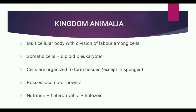In Kingdom Animalia, except for sponges, cells are organized to form tissues, with each tissue being specialized for a specific function. In sponges, cells are also organized to form tissues, organs, and organ systems.